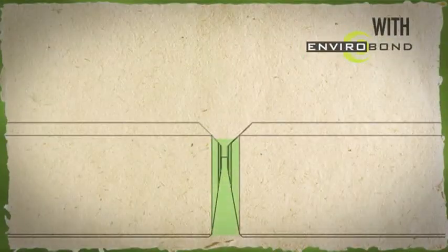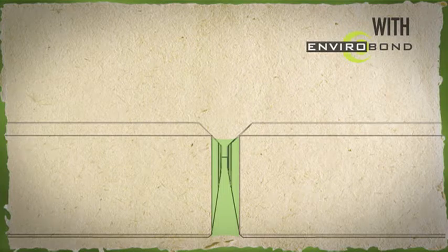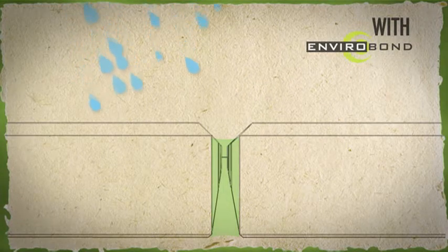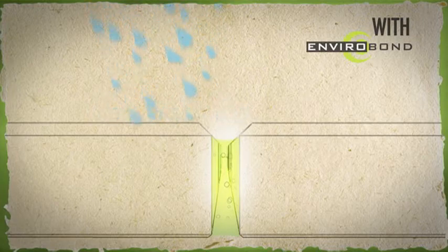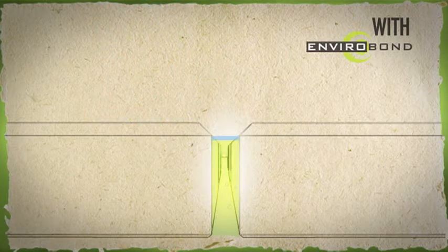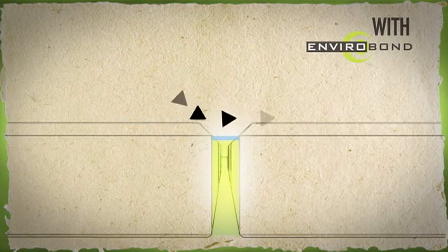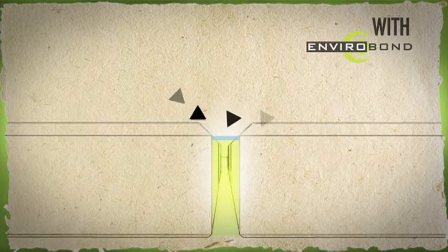The organic binder in EnviroBond uses a living biological bond to glue the sand together. The plant-based glue swells into a gel that grips onto everything around it. This gel also creates a film on the surface of the sand, creating a buffer zone for water to travel over.